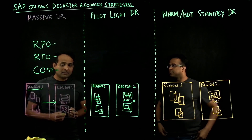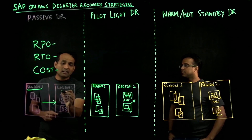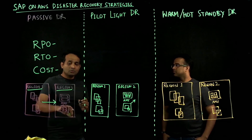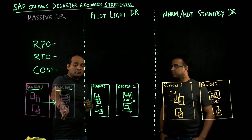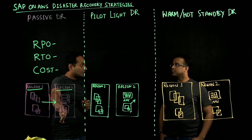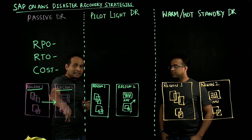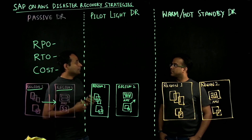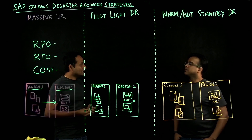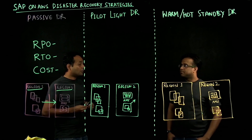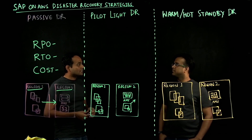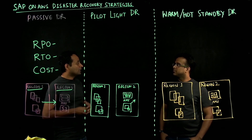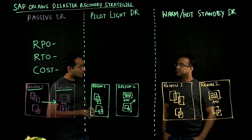Amazon S3 is our object-based storage which gives you 12 nines of durability. Once you send your backups to Amazon S3, from there you can replicate them into the region of your choice — for example, as shown here, sending them to Region 2. All the backups in S3 are accessible there. I also use Amazon Machine Images, which is our native service to take the backup of your Amazon EC2 instances.